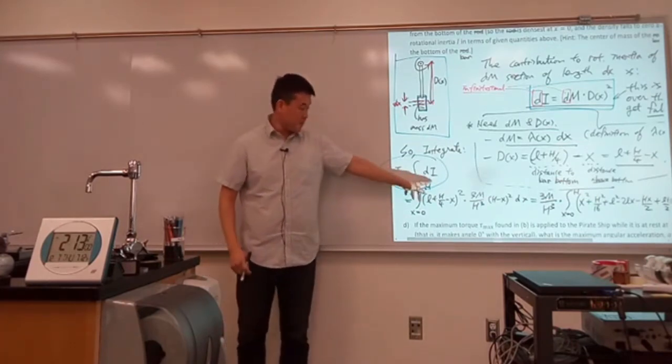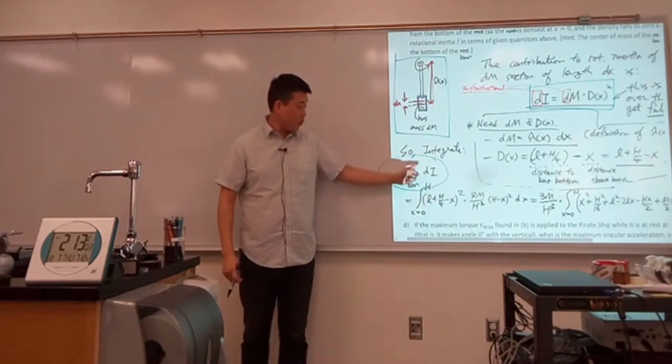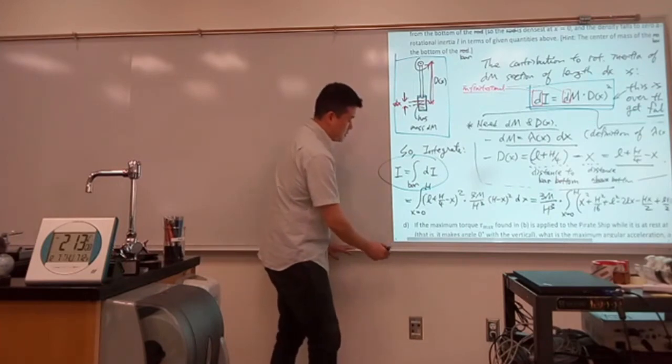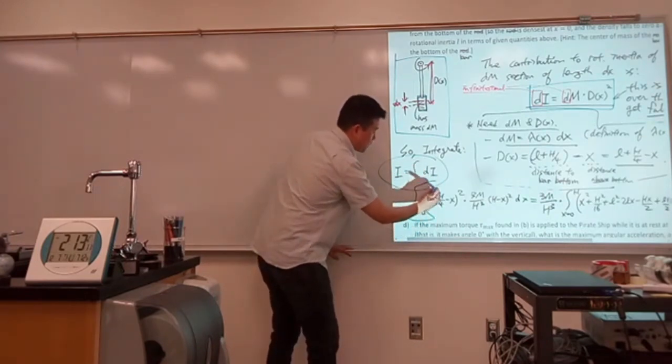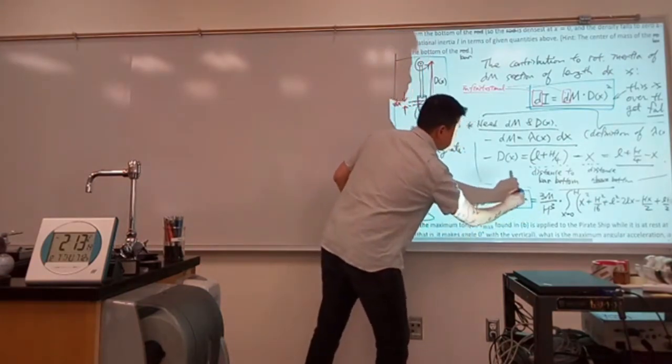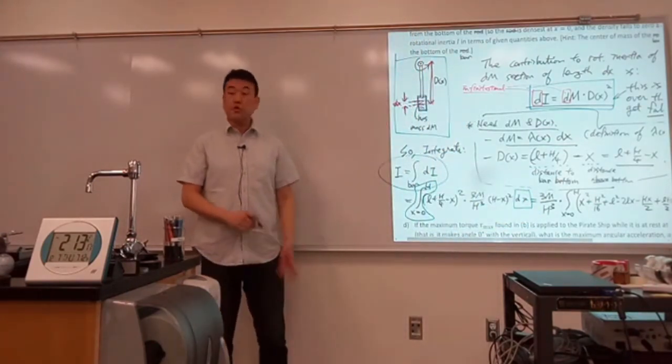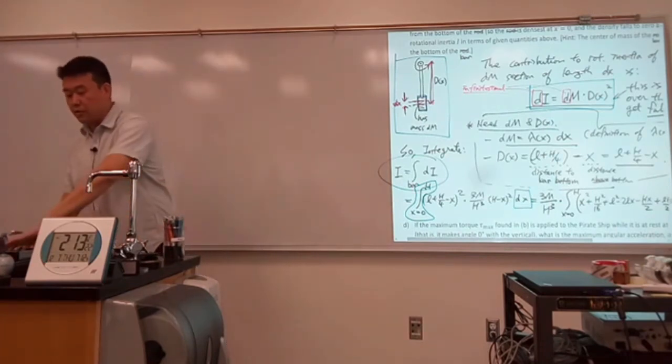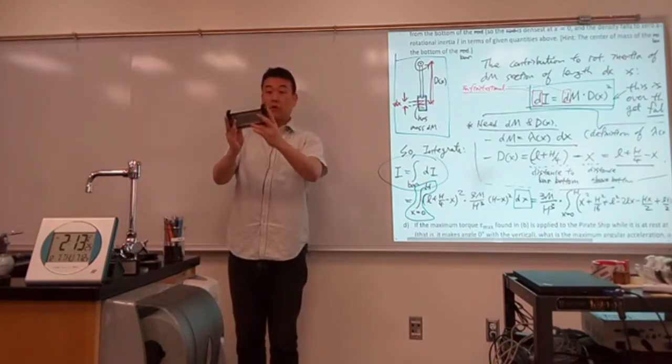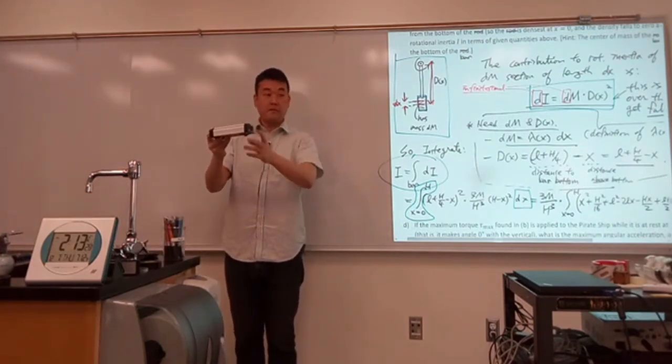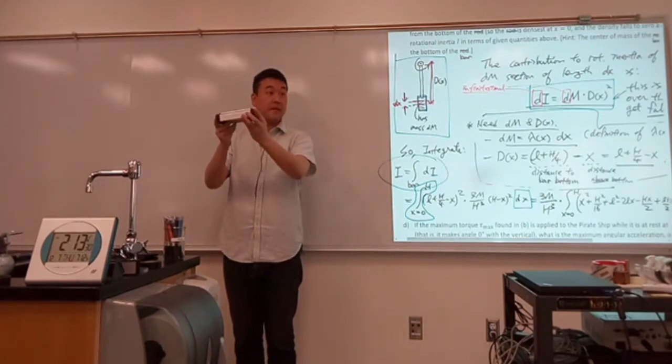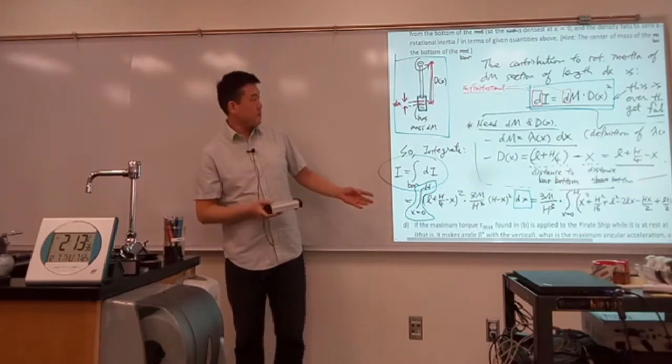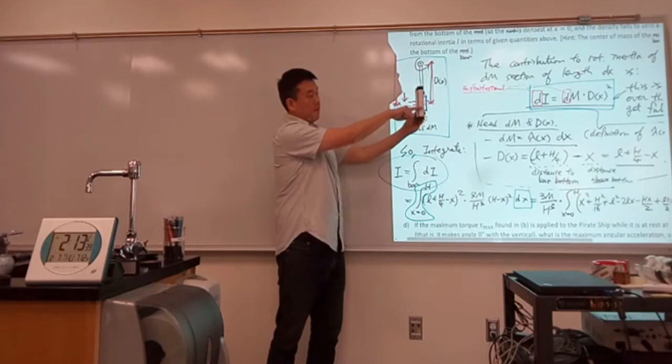total rotation inertia is that infinitesimal rotation inertia added all over the entire object. And the real important step is essentially this portion. You have to know what you are integrating with respect to. So it's easy to say, I am going to integrate over this bar. All right? Tell me how you are going to do it. Tell me nuts and bolts, the exact detail of how you are going to integrate over the bar. And in this case, what we have said is, we are going to parameterize it by position.